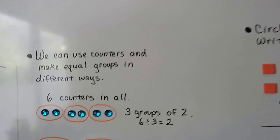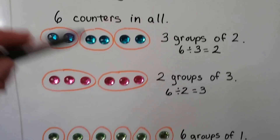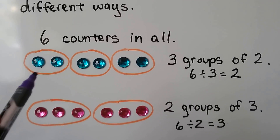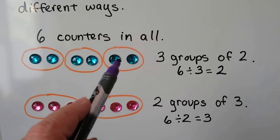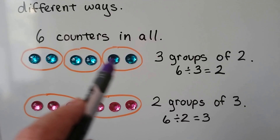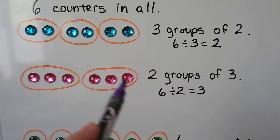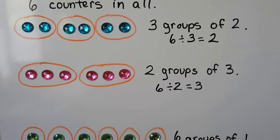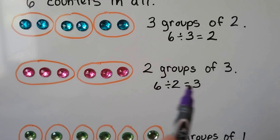We can use counters and make equal groups in different ways. In all of these examples, there's six counters in all, but look at how they change. Six counters in all, we can make three groups of two. The six is divided into three groups with two in each group. Here we've got six counters in two groups, and there's three in each group. So now we have six divided by two equals three. See how they traded places?